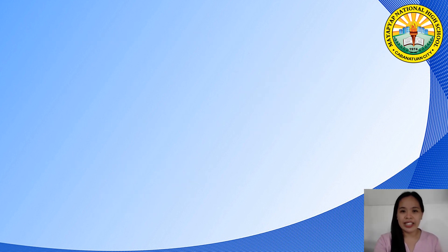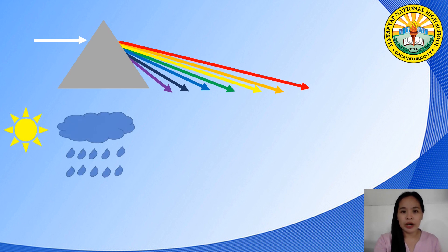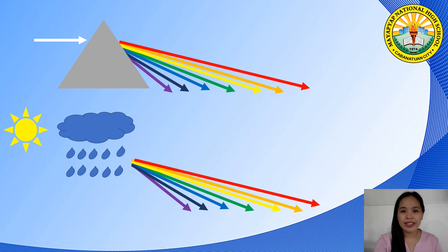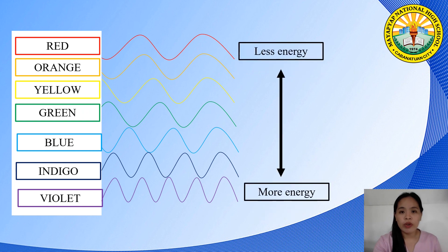Now, let us discuss light. White light is not a single color — it is a mixture of the seven colors of the rainbow. It can be demonstrated by splitting white light with a prism, similar to how rainbows are formed when sunlight is split up by raindrops. The lower the frequency, the less energy in the wave. When it comes to light waves, violet is the highest energy color and red is the lowest energy color.